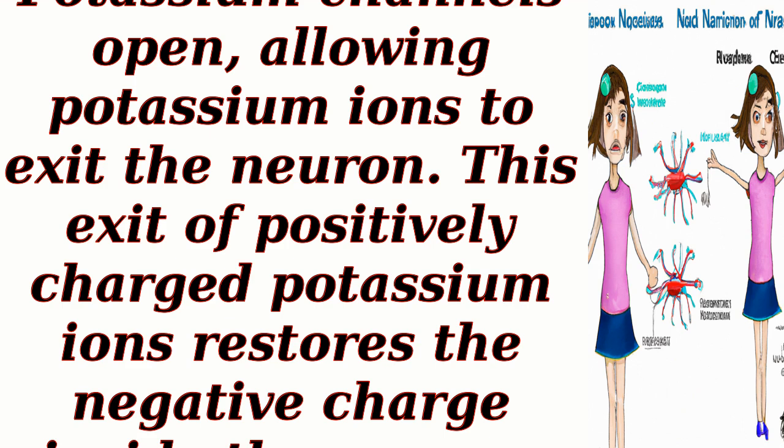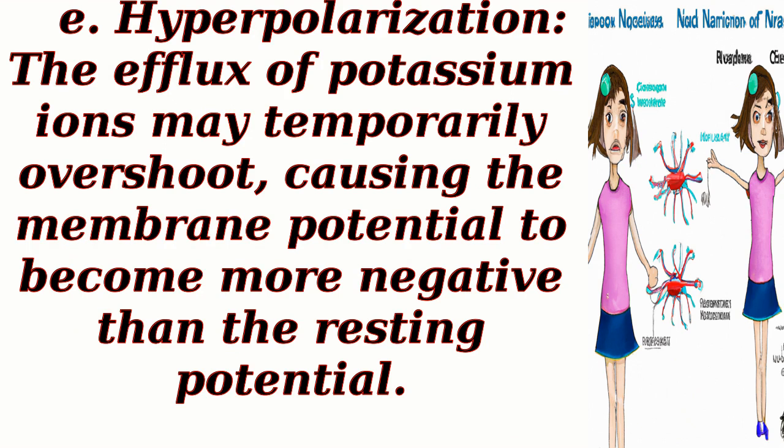Repolarization: Potassium channels open, allowing potassium ions to exit the neuron. This exit of positively charged potassium ions restores the negative charge inside the neuron. Hyperpolarization: the efflux of potassium ions may temporarily overshoot, causing the membrane potential to become more negative than the resting potential.